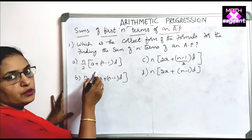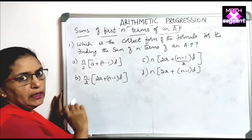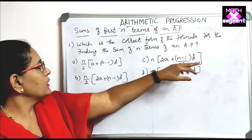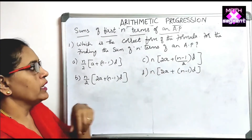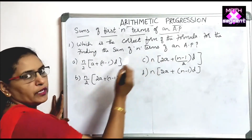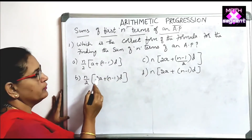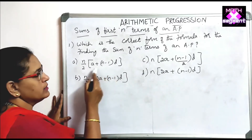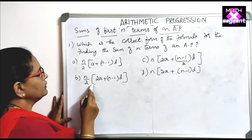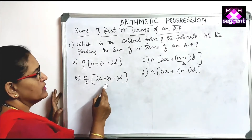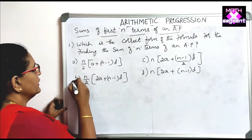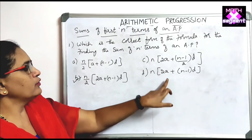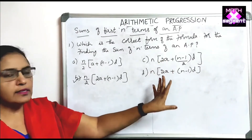The next question is based on the sum of first N terms of an AP. Which is the correct formula for finding the sum of N terms? Option A, N by 2 into (A plus N minus 1 into D), is wrong. The correct formula is option B: N by 2 into (2A plus N minus 1 into D). Options C and D are not from this chapter.